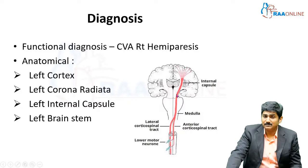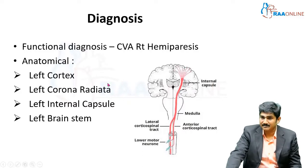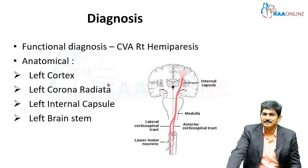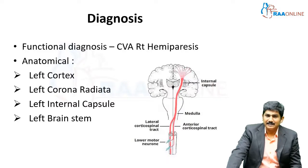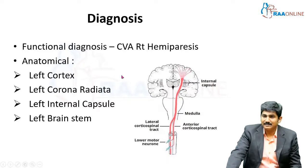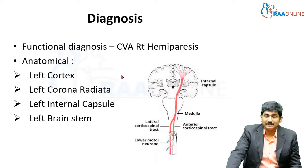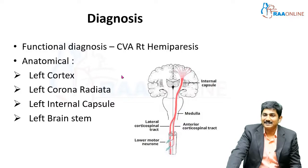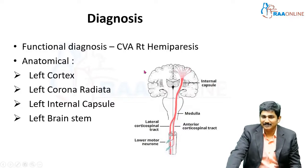What if this patient had a stroke in the left cortex? The cortex has its own cortical sensory functions, so if the cortex is involved, cortical sensation at that particular segment of the body will be lost. But in our patient it is clearly mentioned that cortical sensations are present. So cortical involvement is less likely.